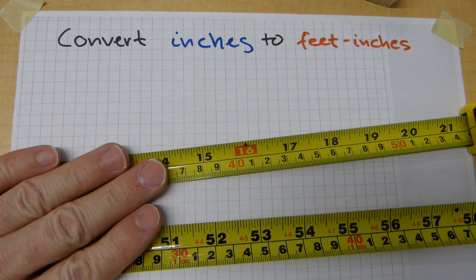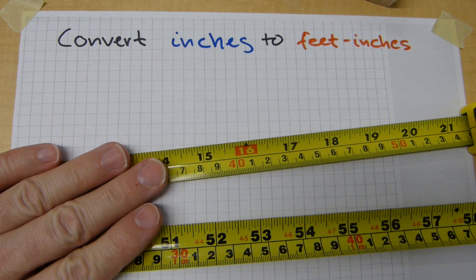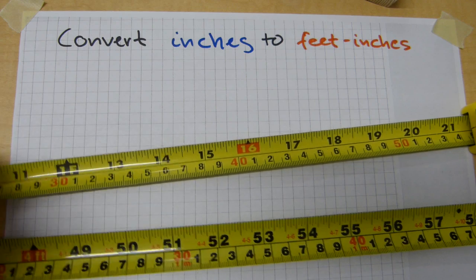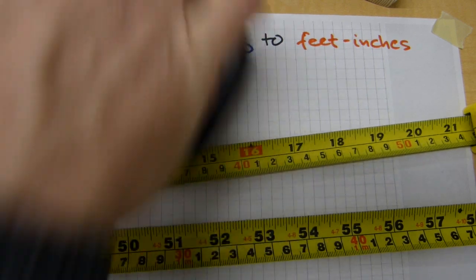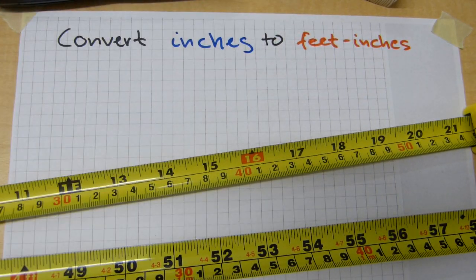Approach one will use tape measures, but there are two different variations to it. I'll show you both. And the second approach uses a calculator. I'll show you how to do that later, after the tape measures.